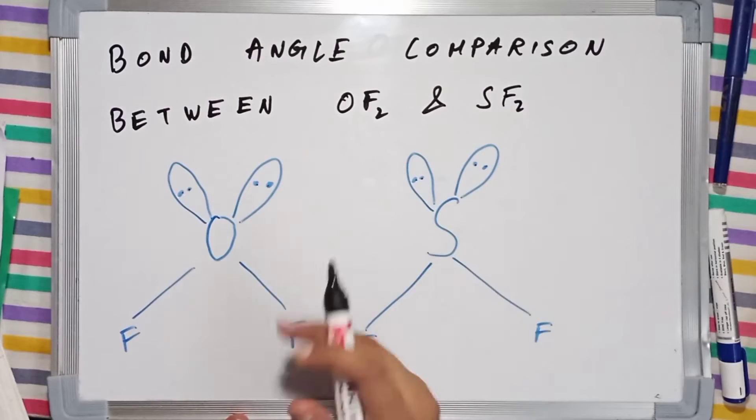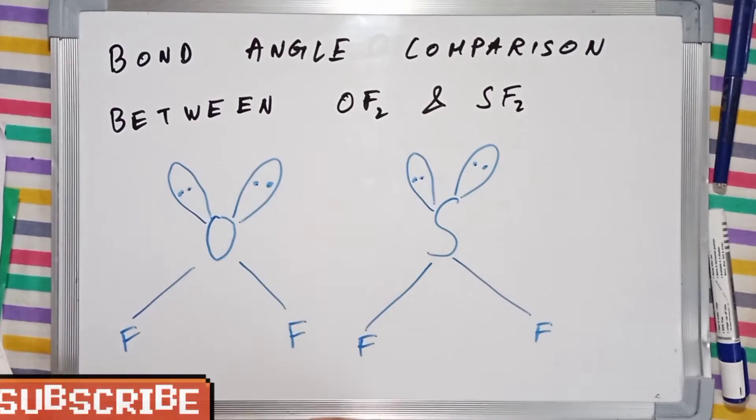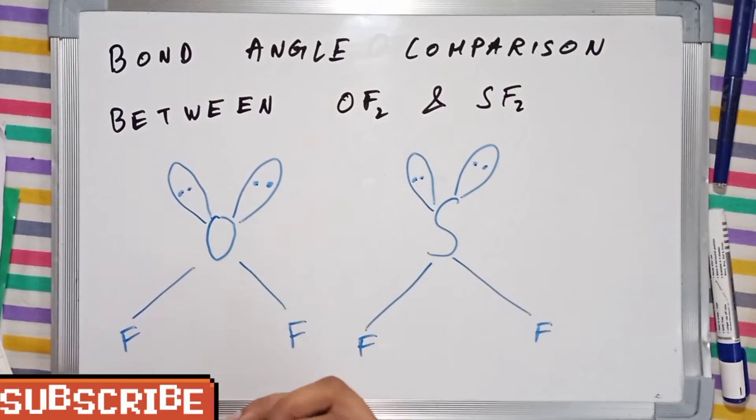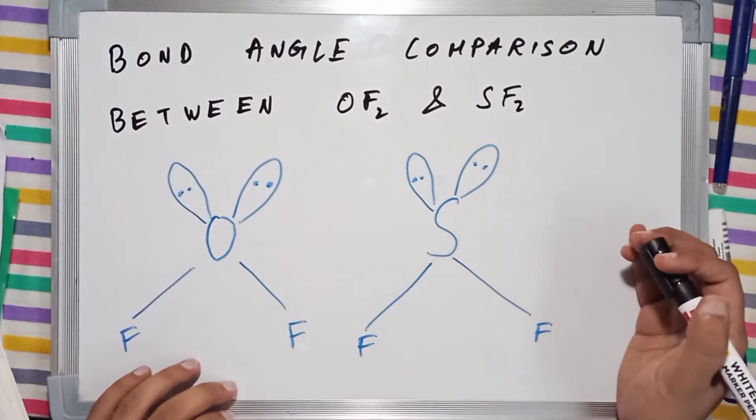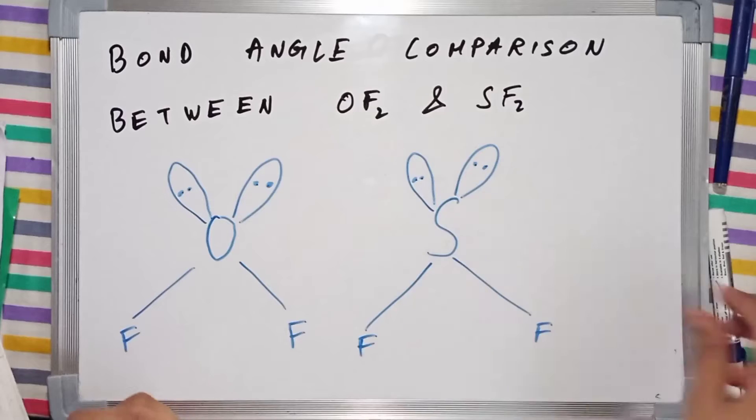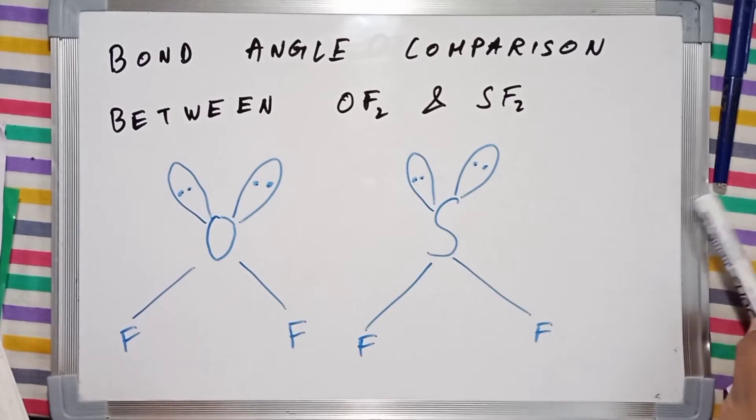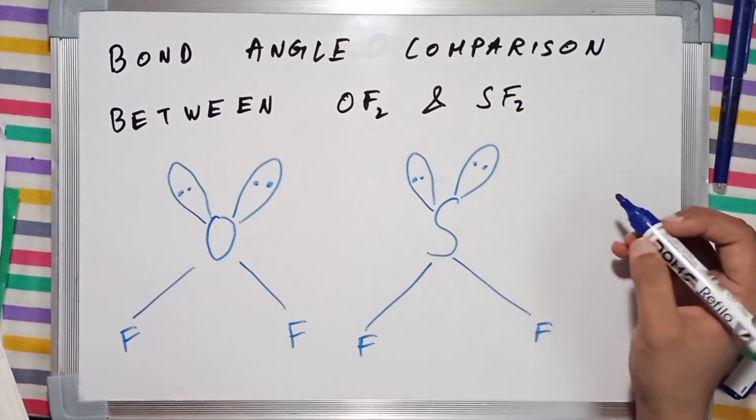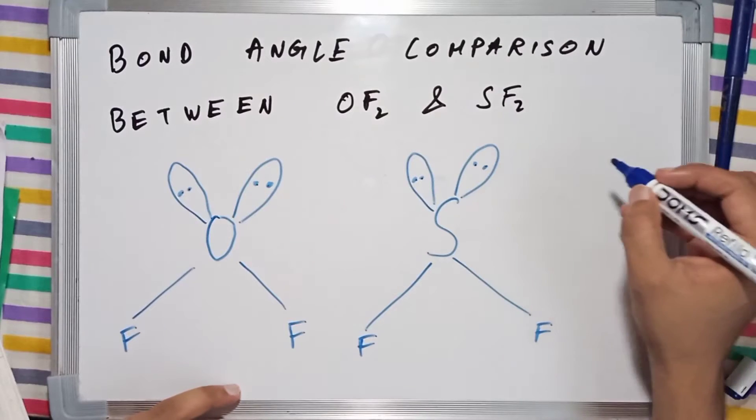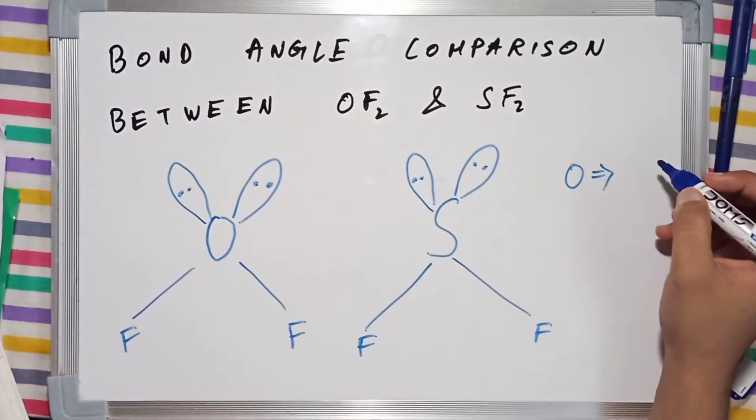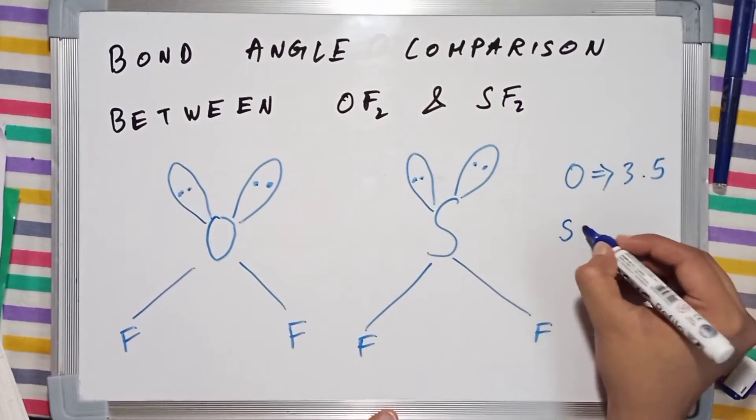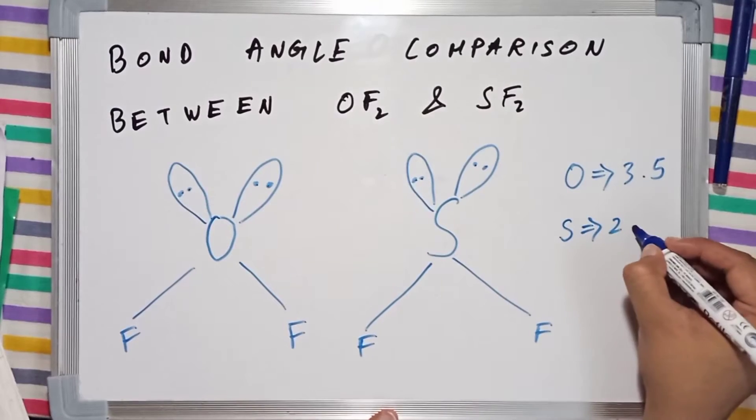oxygen and sulfur have two lone pairs because they both belong to the oxygen family. How are we going to approach this problem? Notice that the electronegativity value of oxygen is greater than sulfur. On the Pauling scale, the electronegativity of oxygen is 3.5, whereas for sulfur it is approximately 2.5.